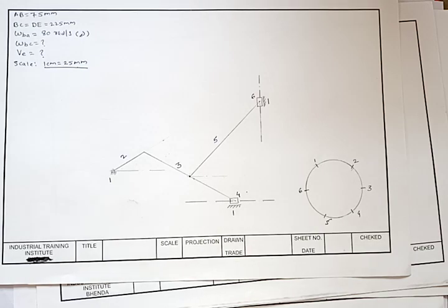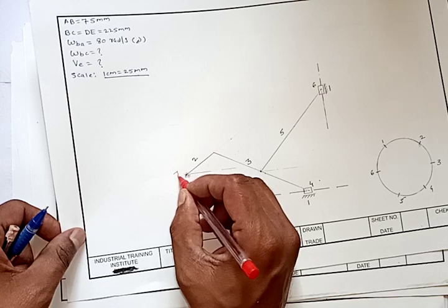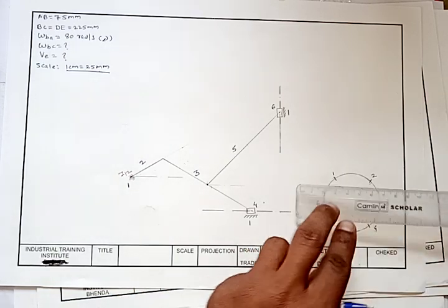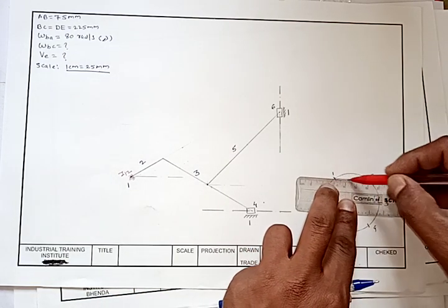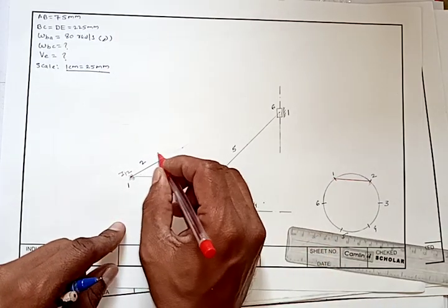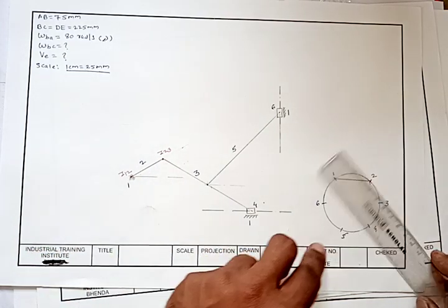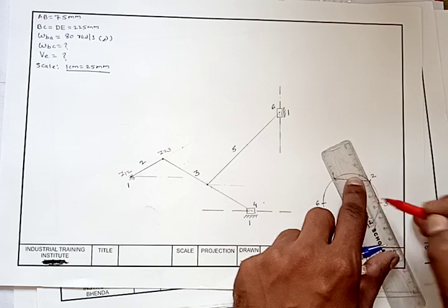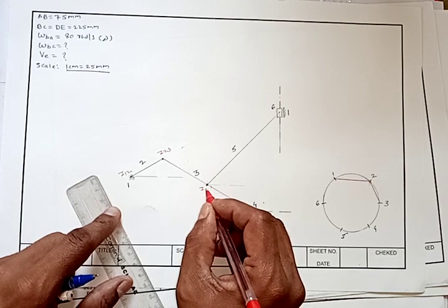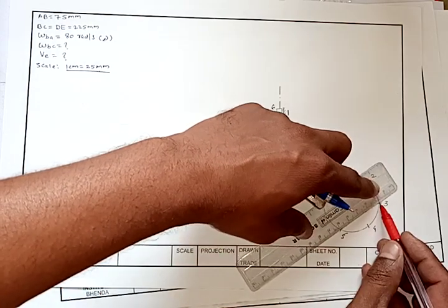Now we will start plotting instantaneous centers. We start from link number 1: 1 is connected to 2 using a pin joint, so here is i12. I will join 1 to 2 in the circle. Then 2 is connected to 3 using a pin joint, so this is the common IC i23; I will join 2 to 3. Next, 3 is connected to 5 using a pin joint, so here is i35; I will join 3 to 5.